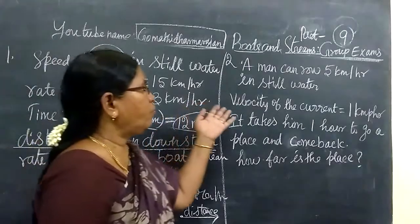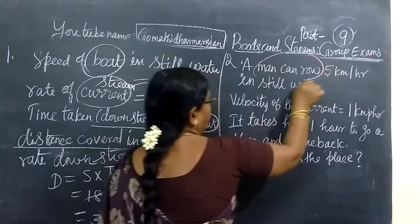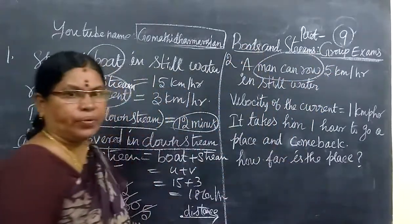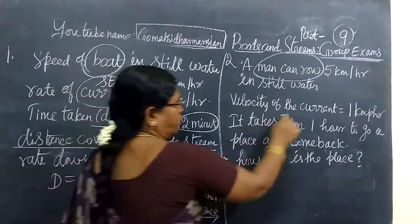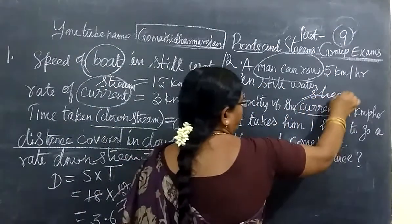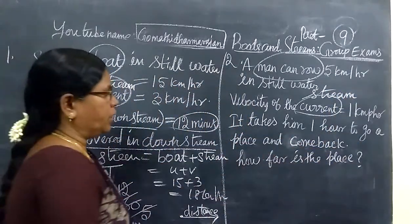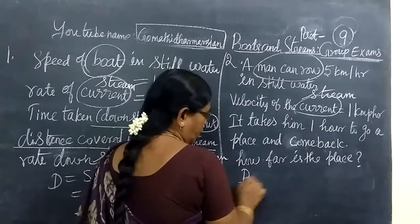A man can row 5 km in still water. Speed of the boat, then velocity of the current, speed of the stream equals 1 km per hour.